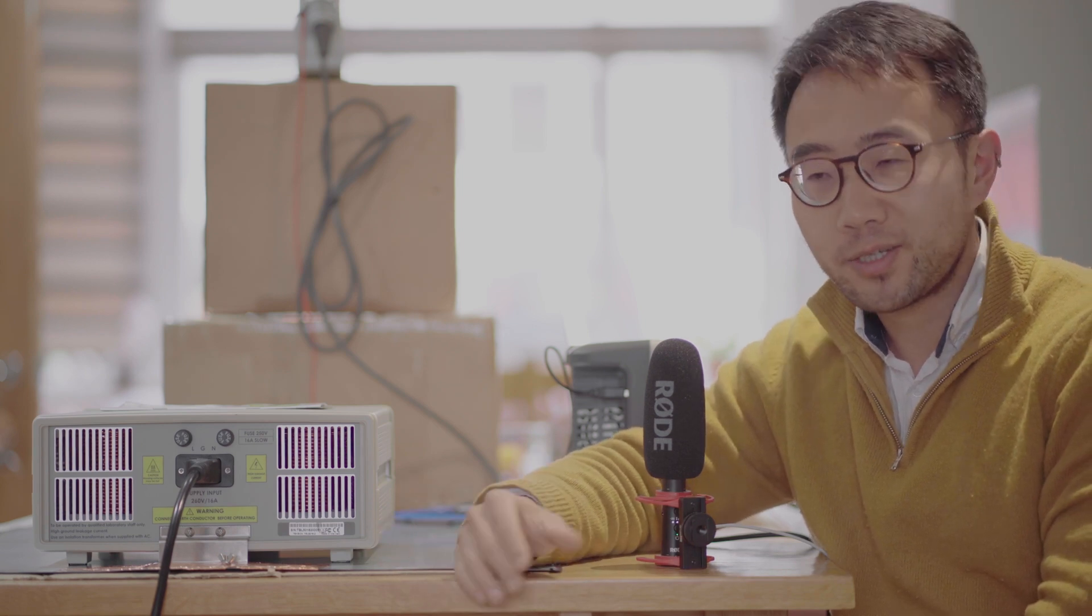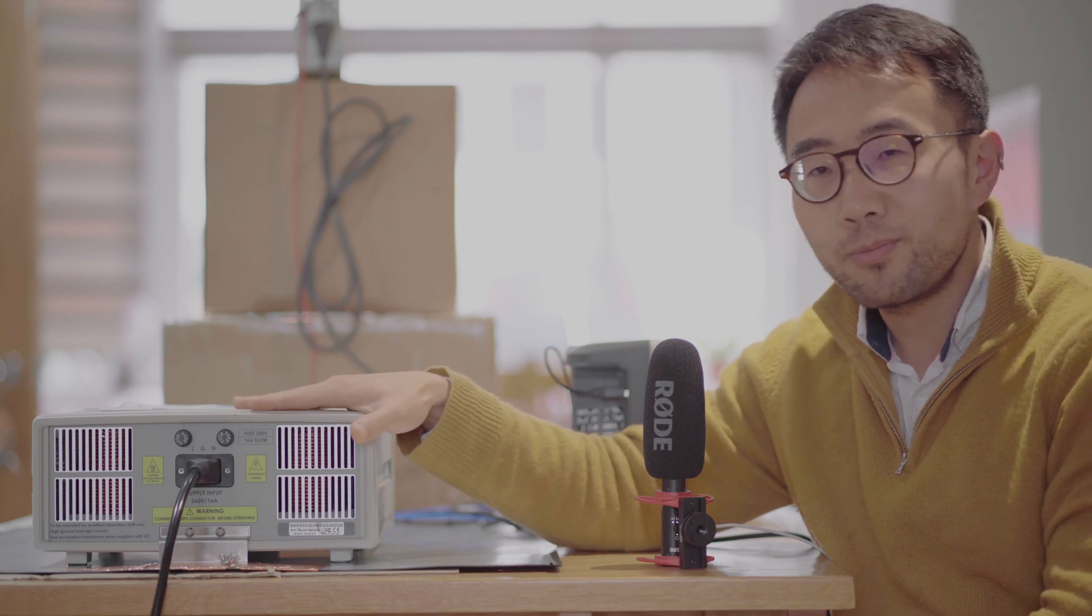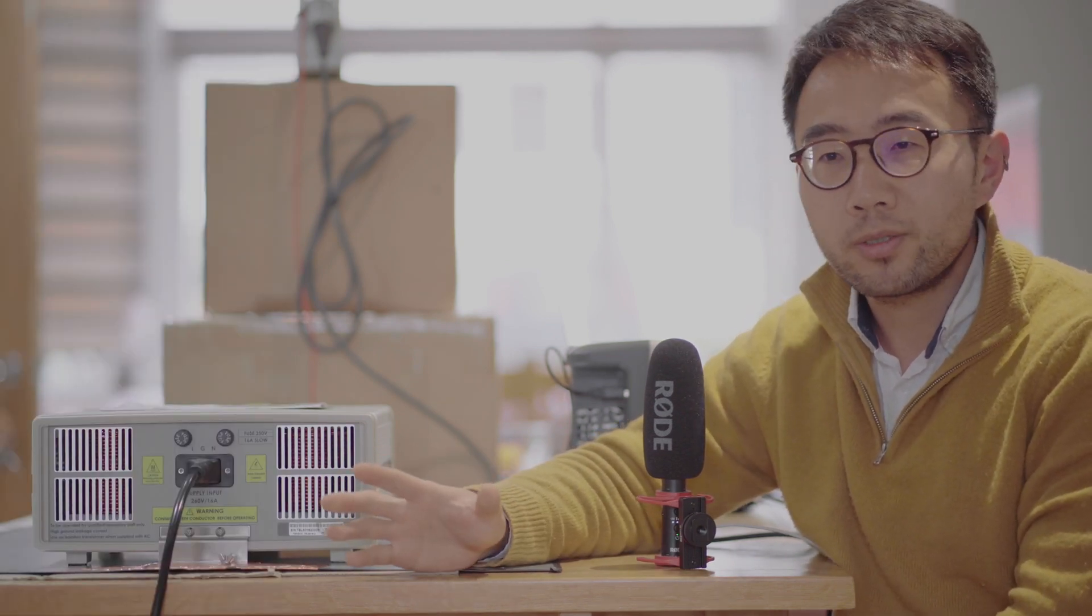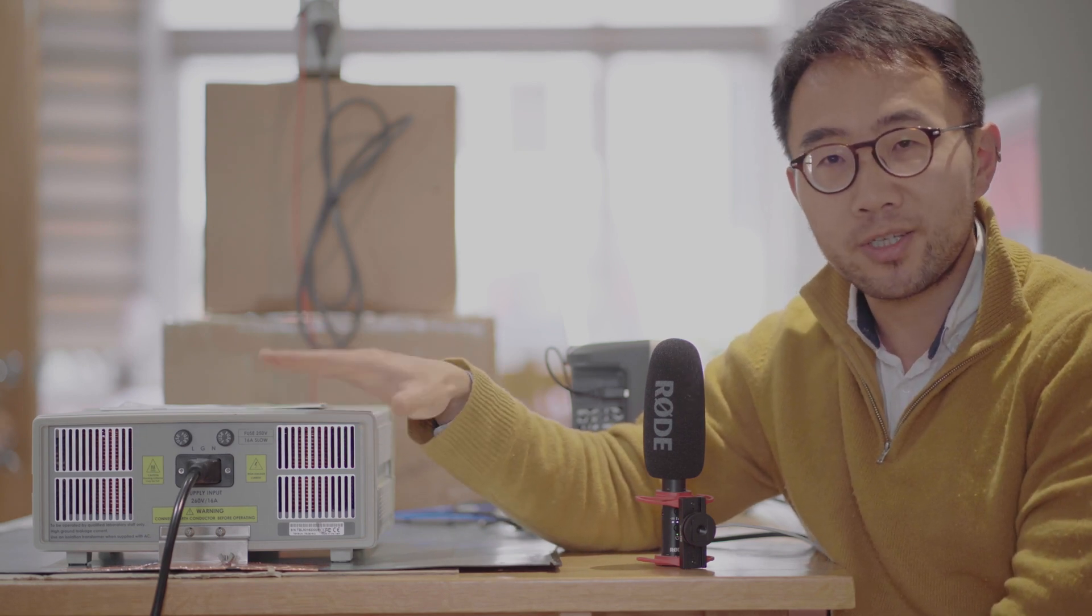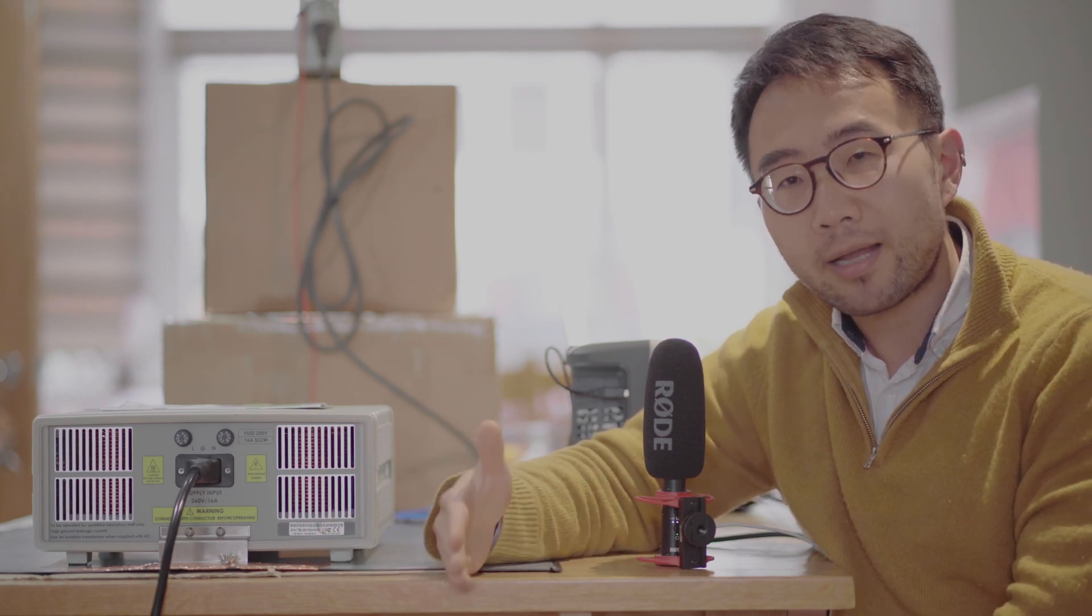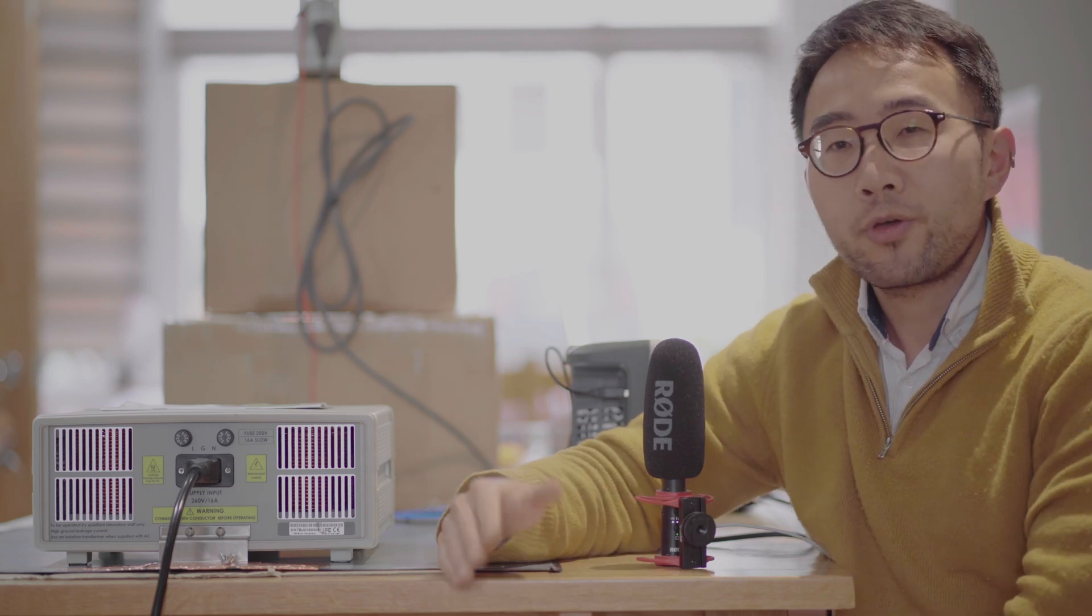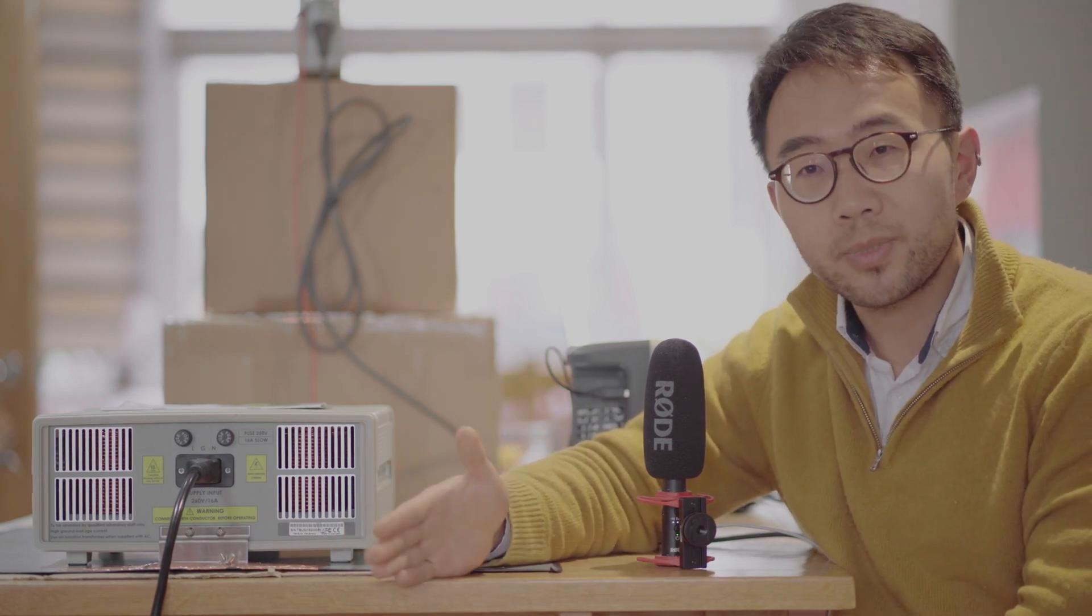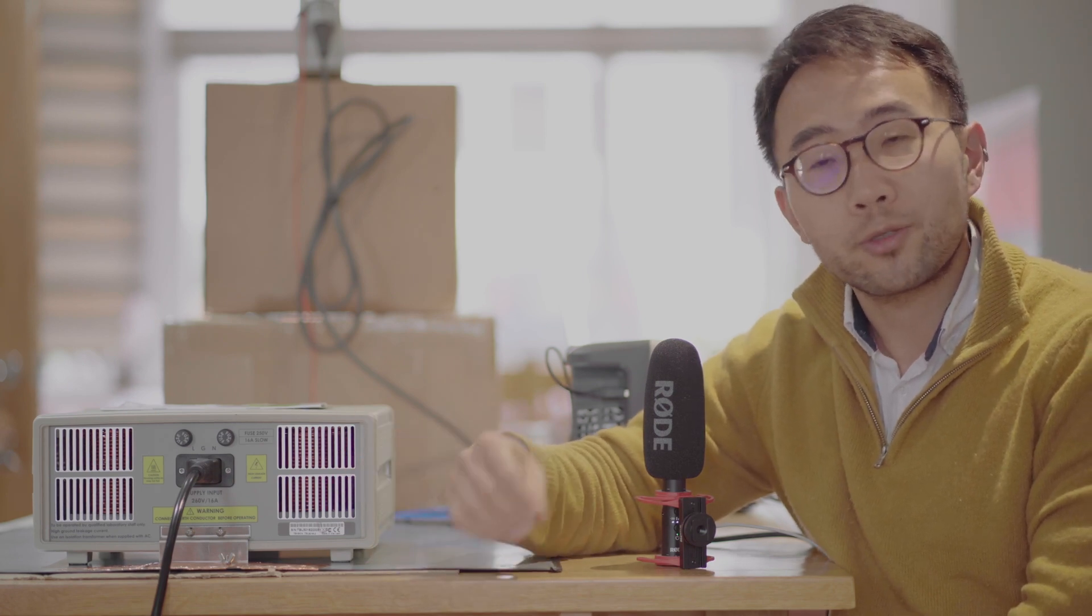So in this session, we demonstrated step by step how to set up a pre-compliance conducted emission test by using a LISUN module, a spectrum analyzer, and an EMC view software. We explained why it is important to always make sure that high voltage safety practice is executed first. We then explained why it is important to do the scanning segment by segment. If you have the software, the software will do it for you very easily. If you don't have the software, I would also suggest you do it segment by segment.